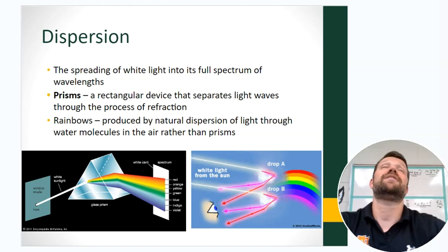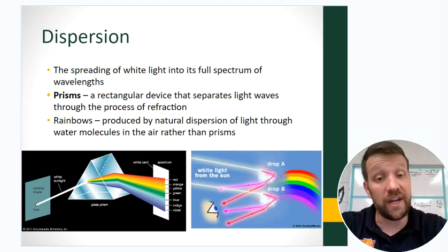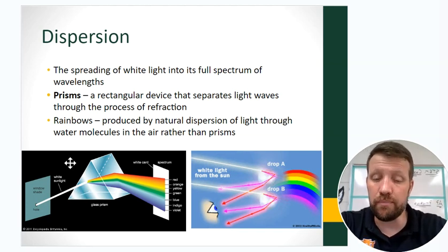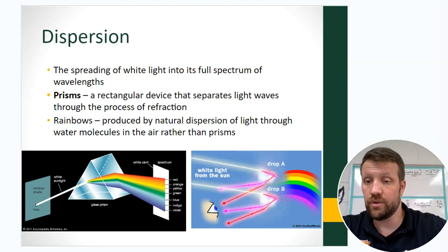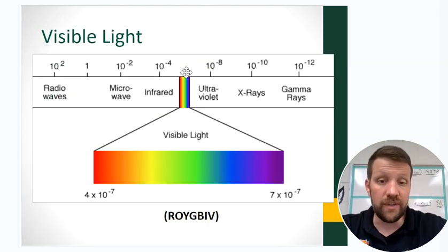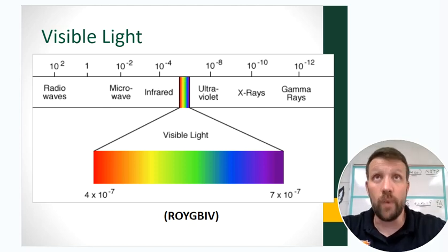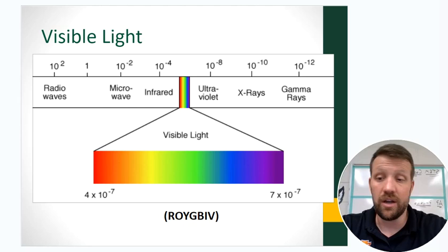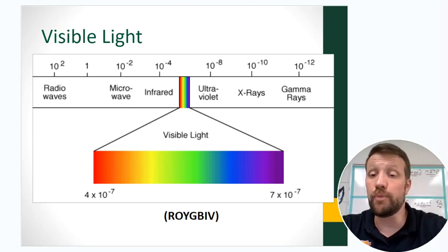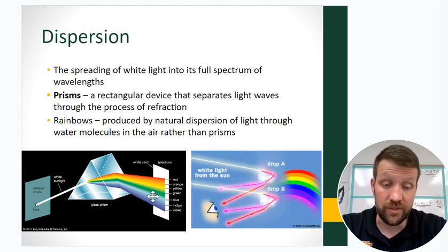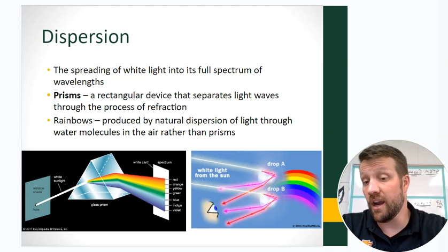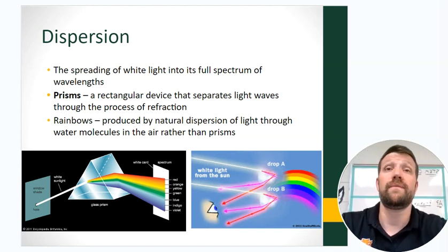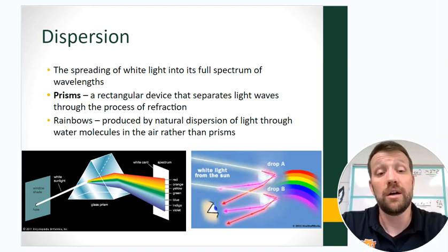Dispersion is the spreading of white light, done through a prism. Because of the prism's shape, it spreads out the packed wavelengths of visible light into a much larger rainbow. Rainbows are a natural dispersion of light through water molecules suspended in the air — you need a fairly significant amount of water in the air, which is why you only see rainbows typically after a rain shower.